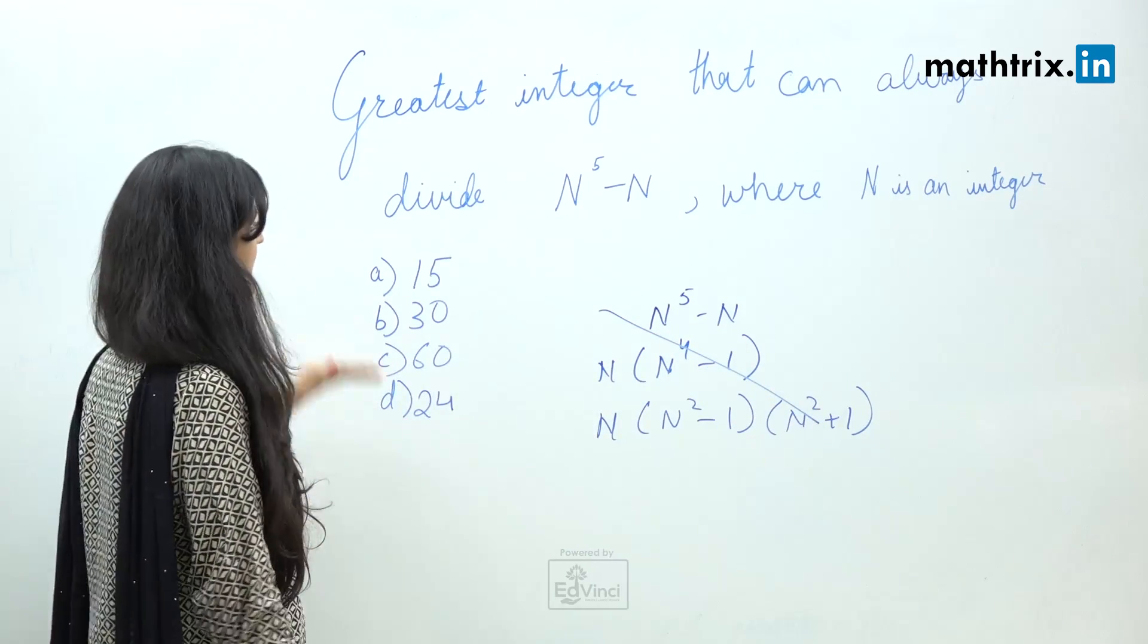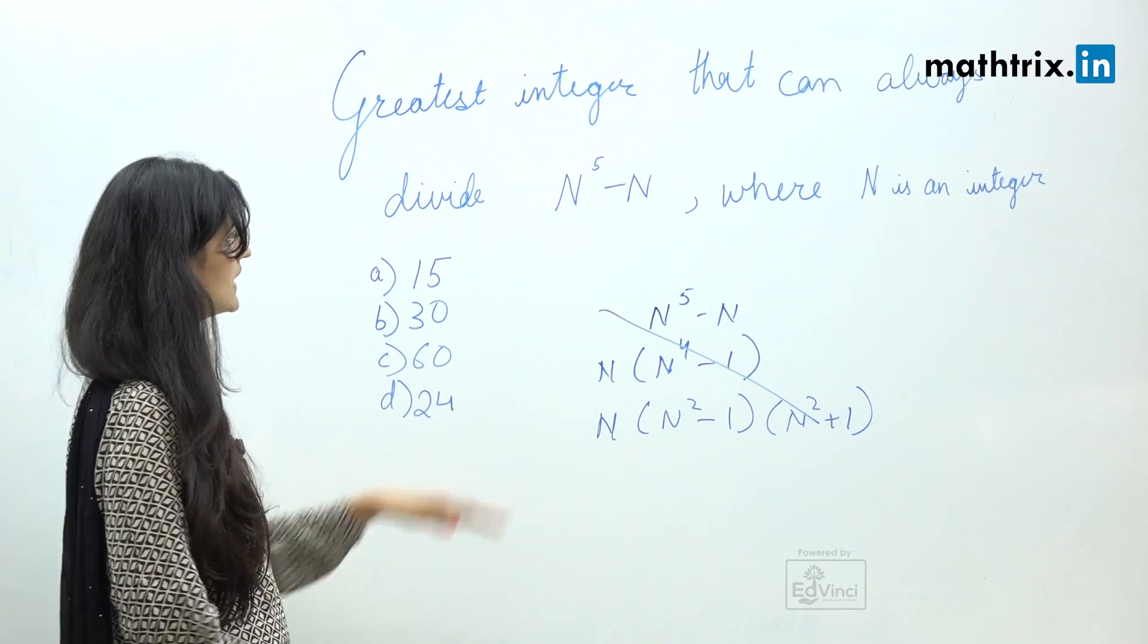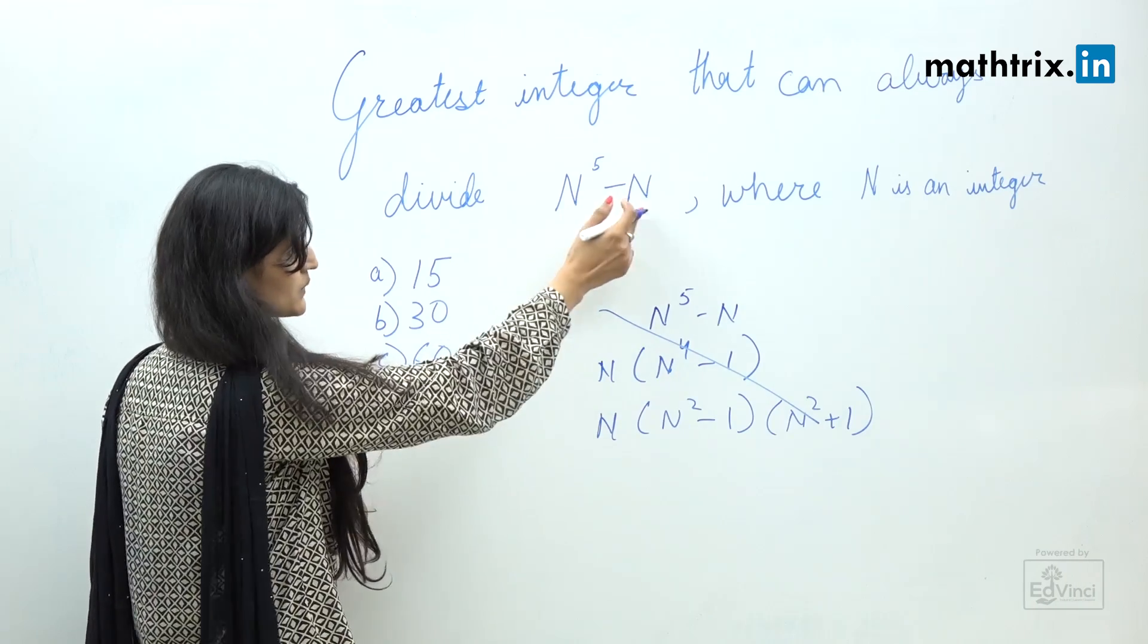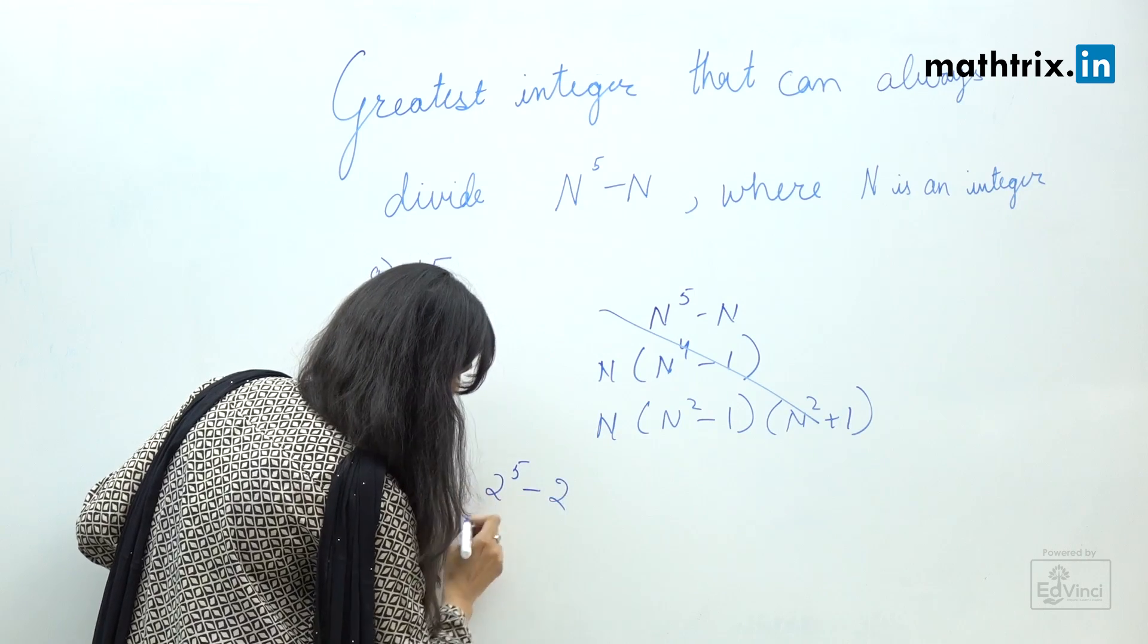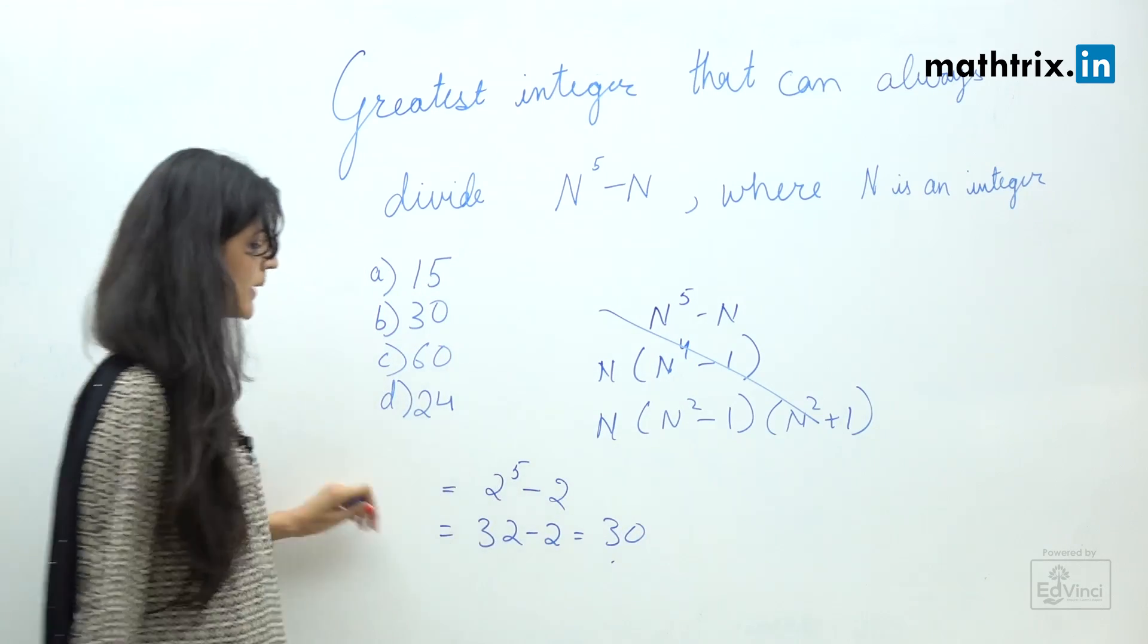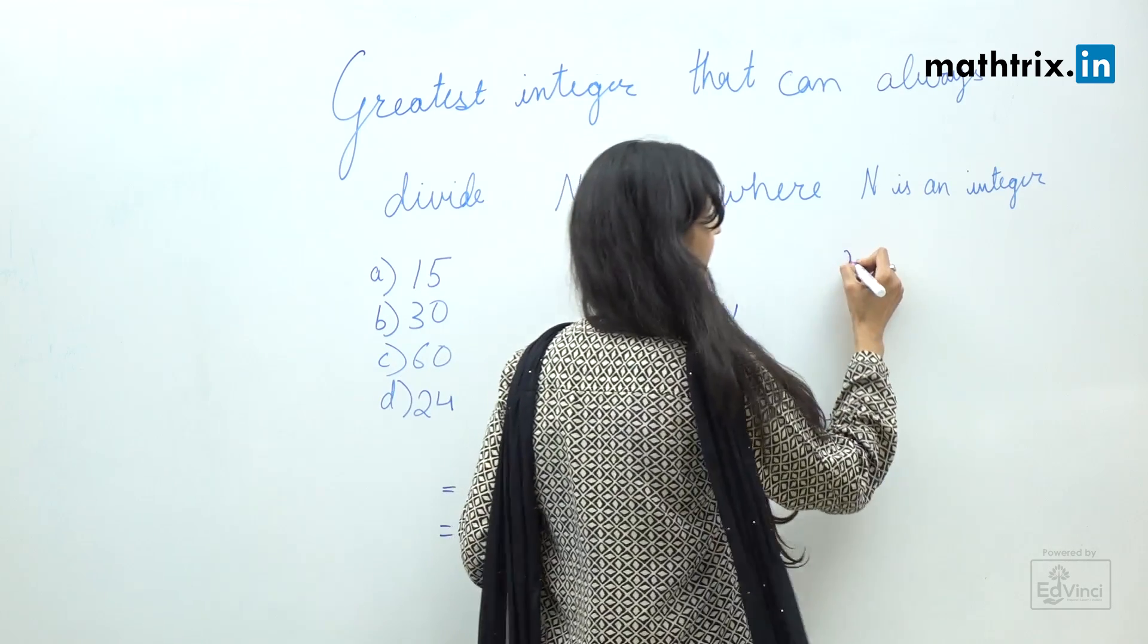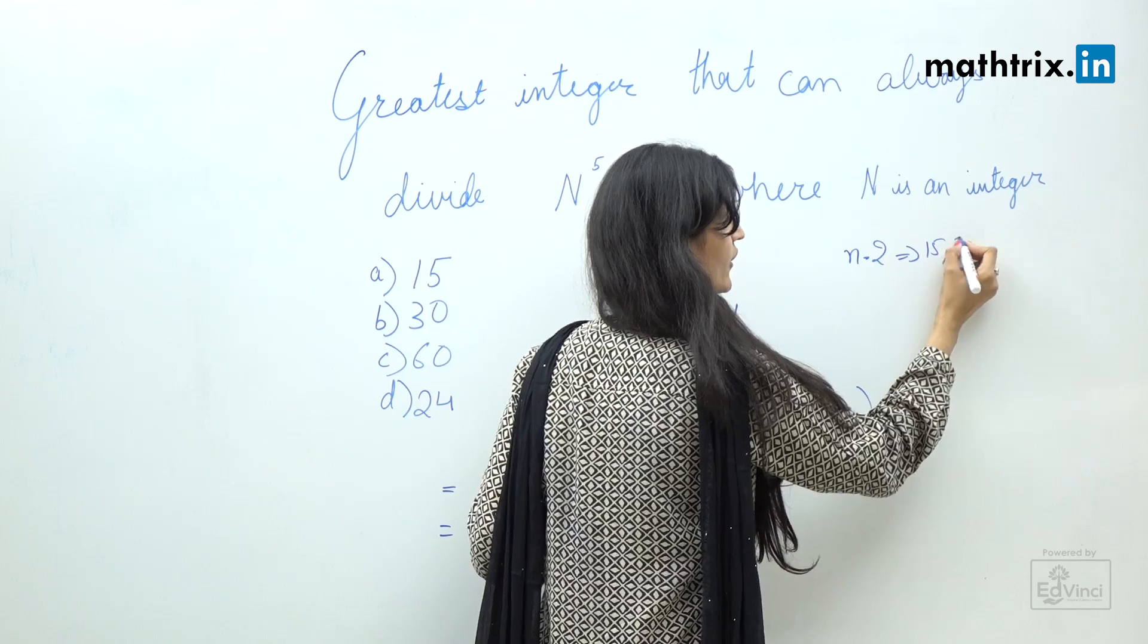We can solve this just by substituting the integers here. For example, let's take n equals 2. So if we take n equals 2, it will be 2 raised to the power 5 minus 2 which is 32 minus 2 which is nothing but 30 which can be divided by 30 and 15. So if n equals 2 it can be divided by 15 or 30.